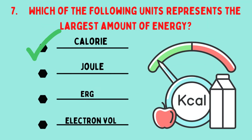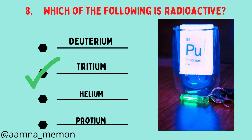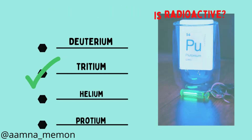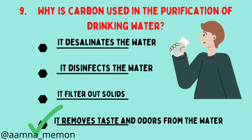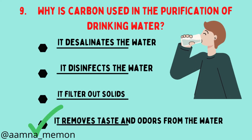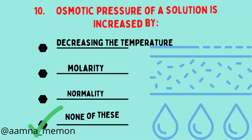Which of the following units describes the largest amount of energy? Calorie. Which of the following is radioactive? Tritium. Why is carbon used in the purification of drinking water? Because it removes taste and odors from the water.